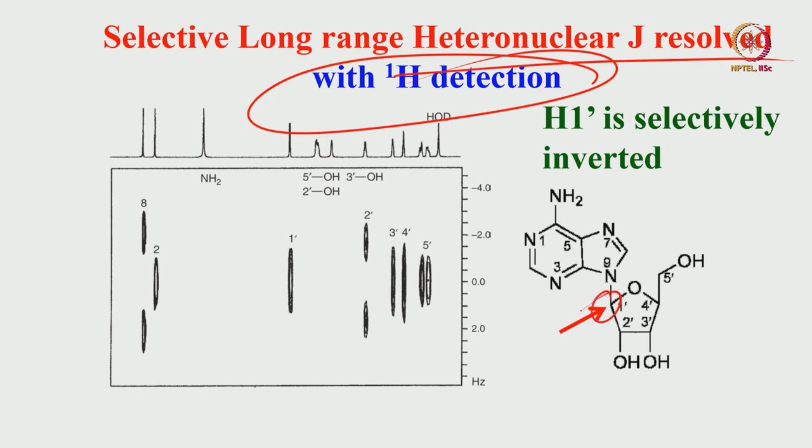This is an example of a selective long-range heteronuclear J-resolved spectrum with proton detection. H-prime is selectively inverted, and the coupling of H-prime to different carbons can be seen. The INEPT sequence results in polarization transfer; the selective pulse inverts only the selected proton; JCHs are refocused except for the selected proton; magnetization is back-transferred via reverse INEPT and detected. Because we are detecting proton indirectly, the sensitivity is much higher.